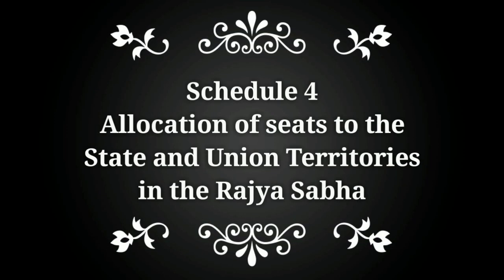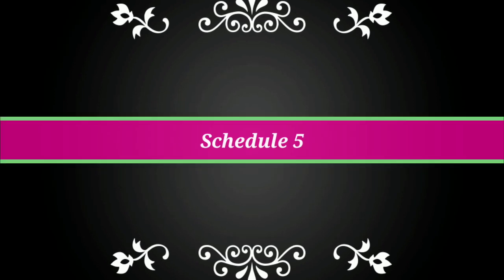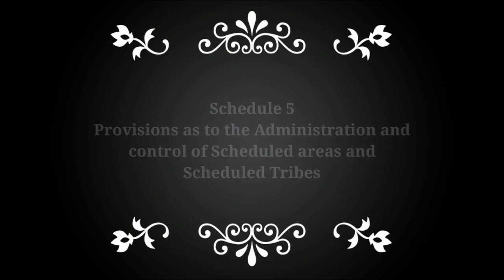Schedule 4 deals with the allocation of seats to the States and Union Territories in the Rajya Sabha. Schedule 5 contains provisions as to the administration and control of Scheduled Areas and Scheduled Tribes.